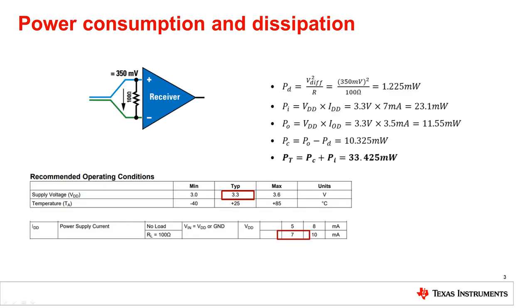Because of the low voltage nature of LVDS, another benefit is the low power. We can see this by taking a look at some quick calculations with some typical specifications from an LVDS driver data sheet. The power dissipated is 1.225 milliwatts, the input power is 23.1 milliwatts, and the power consumption is 10.325 milliwatts. Combining these, the total device power is only 33.425 milliwatts.